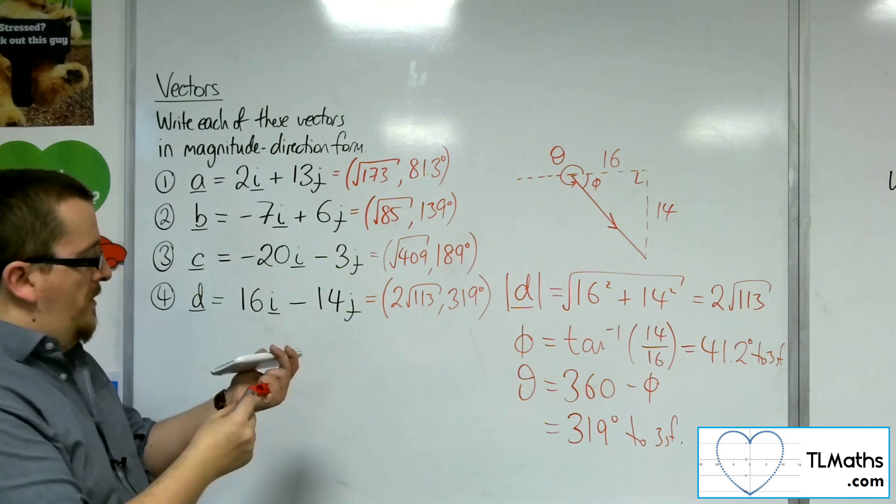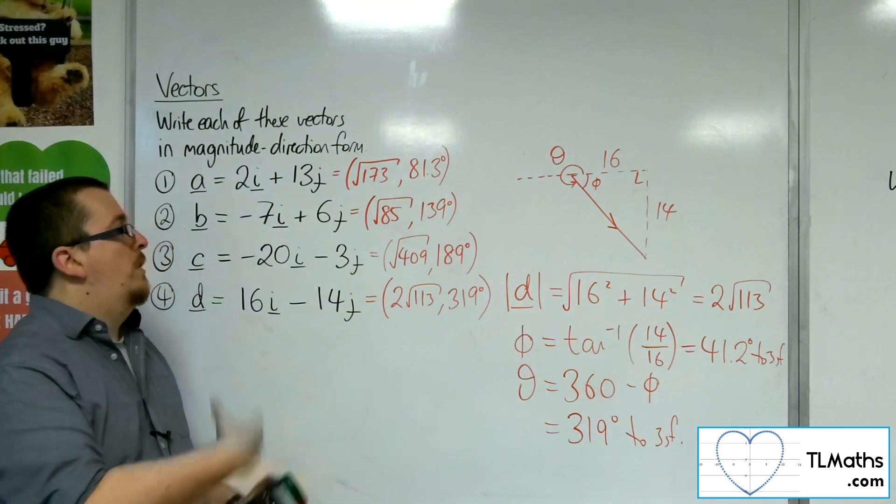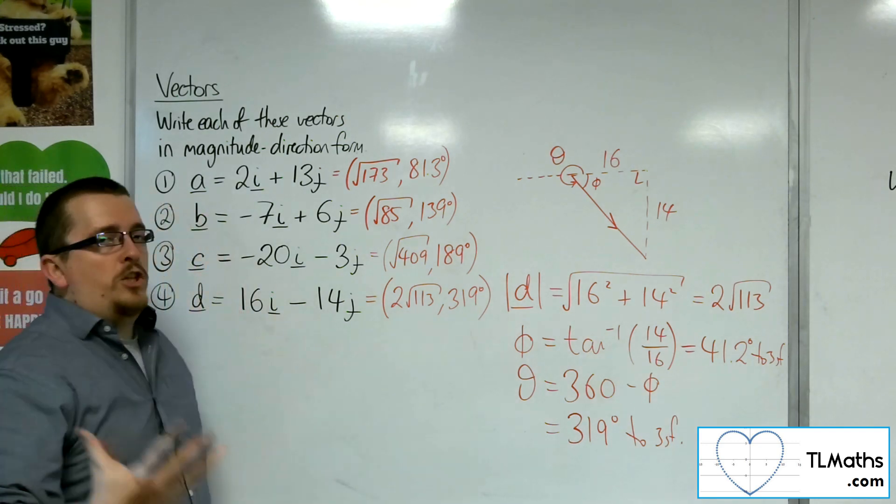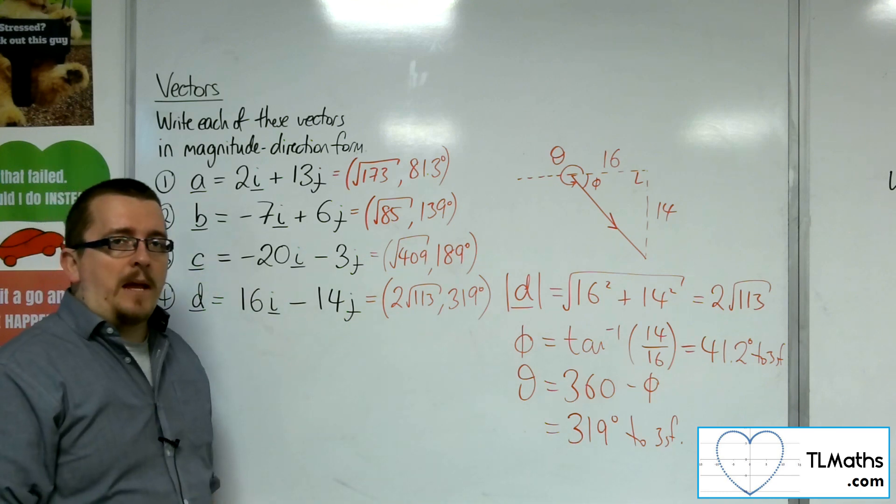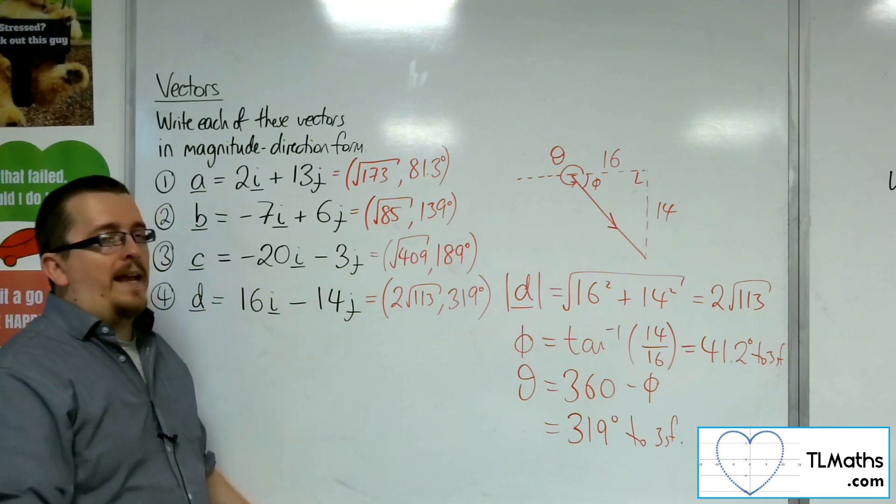So, that is how we can write vectors in magnitude direction form. Draw a diagram to make sure it's very clear to the examiner what you're doing, if one already hasn't been drawn.